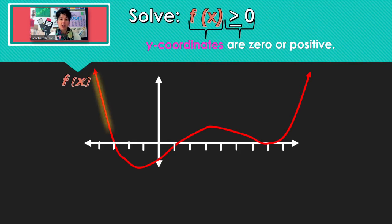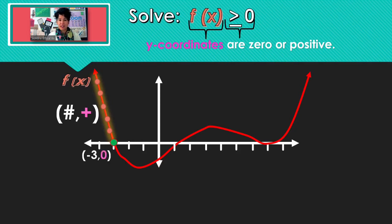Looking along here: all of those points have positive y-coordinates, so we know we're using that section. But right here at the x-intercept, the y-coordinate is 0.